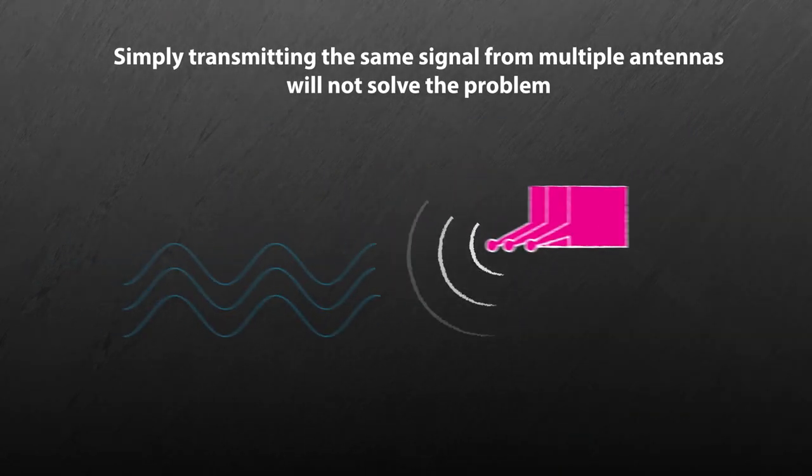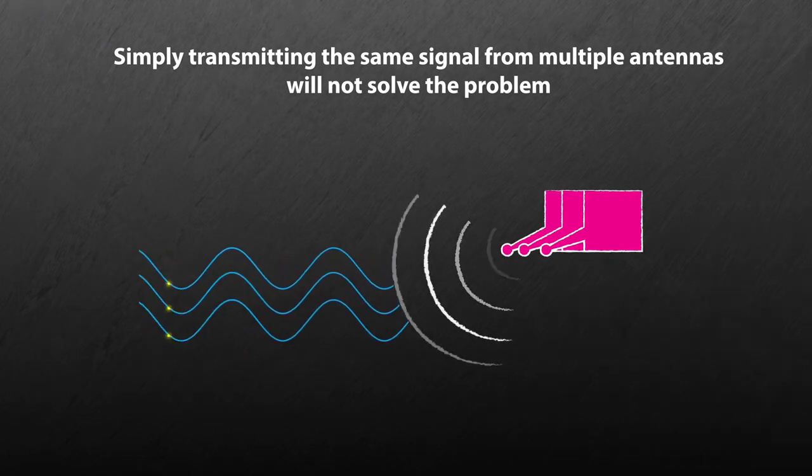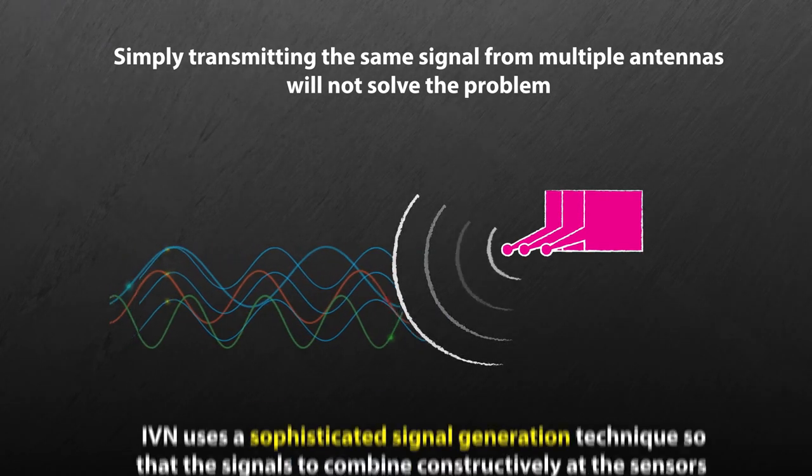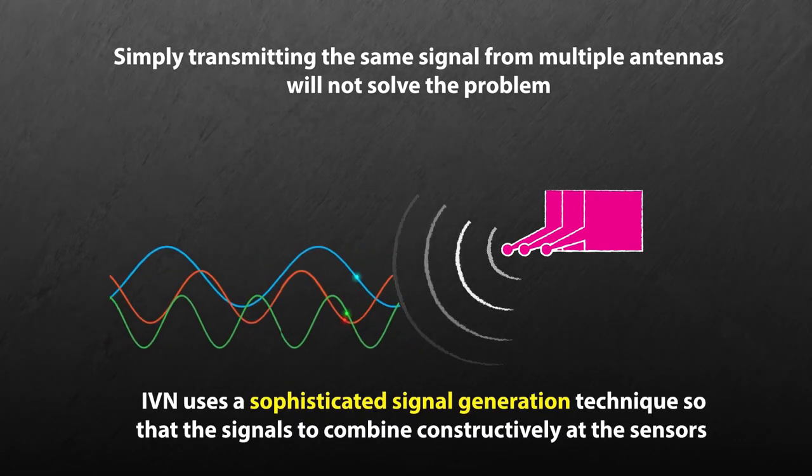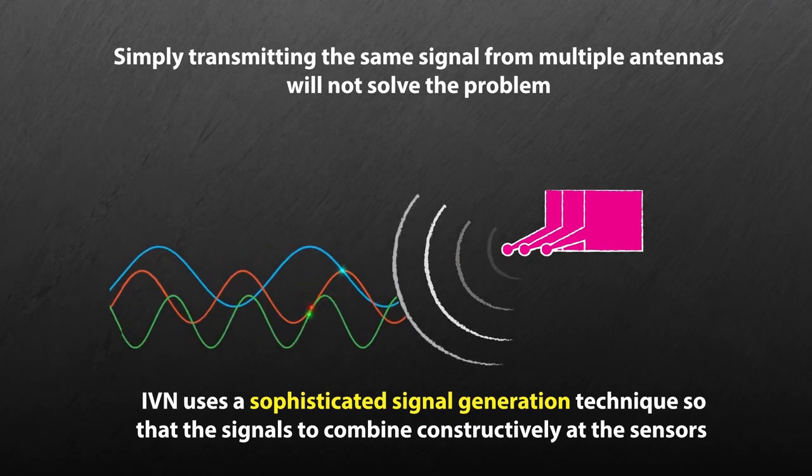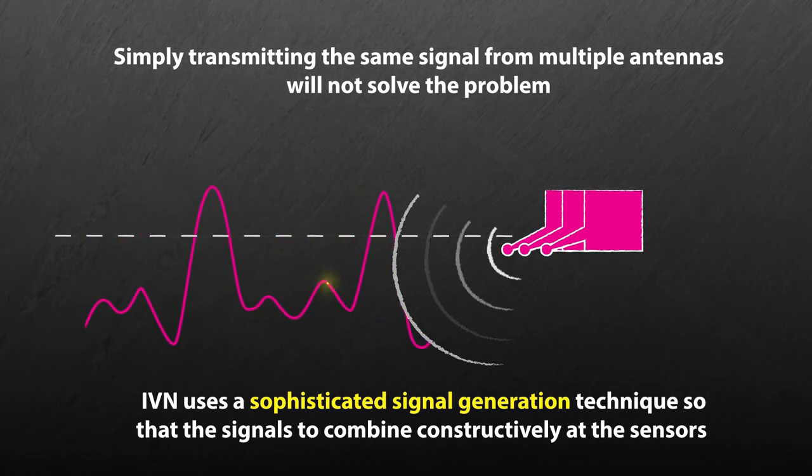But simply transmitting the same signal from multiple antennas will not solve the problem. IVN uses a sophisticated signal generation technique that allows the signals to combine constructively at the sensors.